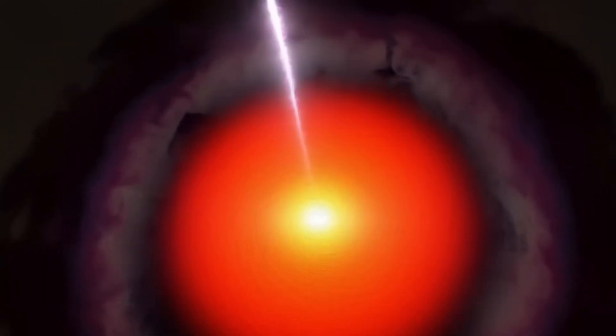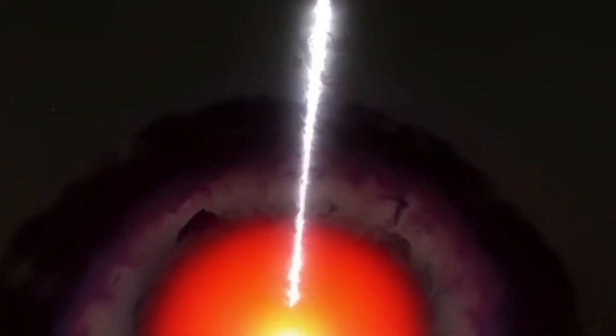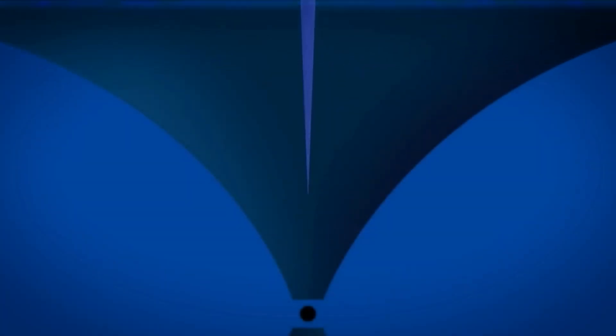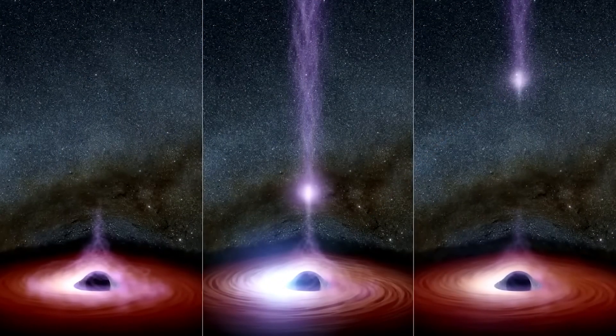Escaping from a black hole is impossible. At least, scientists don't know how. After all, even particles at the speed of light cannot do this. That's why black holes are invisible to us, as they simply absorb all emitted light. A real cosmic vacuum cleaner.